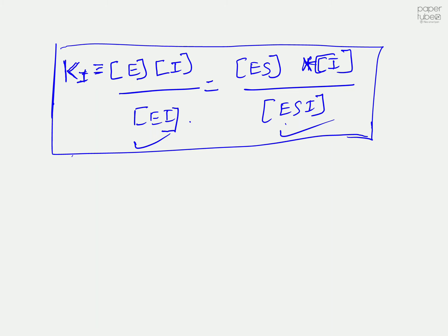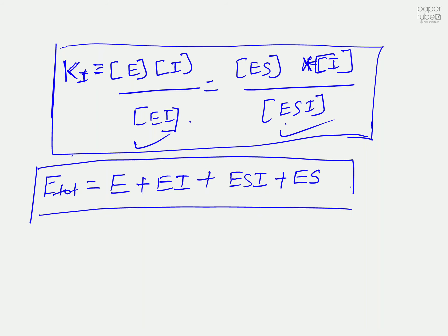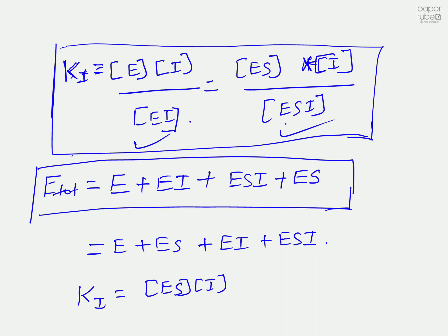At any instant of time, the total enzyme concentration inside the reactor must equal the free enzyme plus the enzyme-inhibitor complex plus the enzyme-substrate-inhibitor complex plus the enzyme-substrate complex. So we can write: E_total = [E] + [ES] + [EI] + [ESI]. Now, going back to the Ki expression, we know Ki equals [ES] multiplied by [I] divided by [ESI], and we need to eliminate the unmeasurable concentrations from our rate expression.